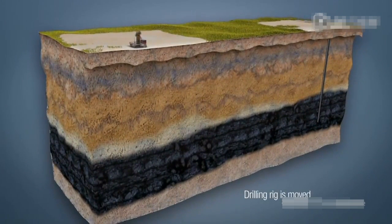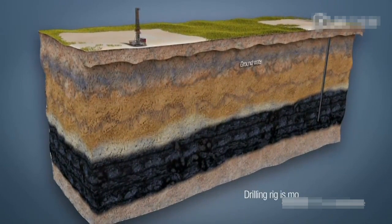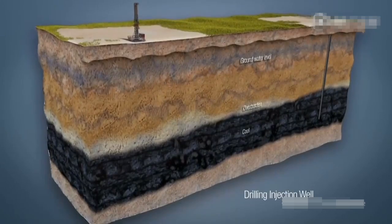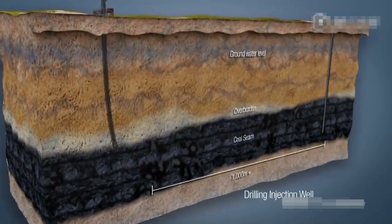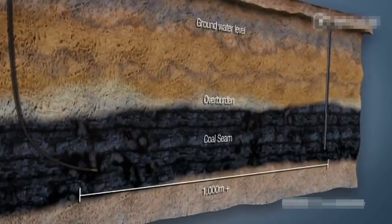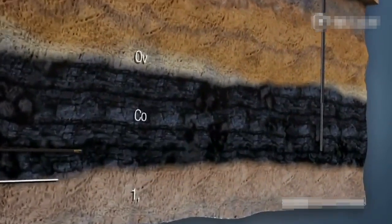The injection well is then drilled horizontally in the coal seam to intersect the production well. The well is drilled along the bottom of the coal seam in order to maximize the amount of coal converted into gas.